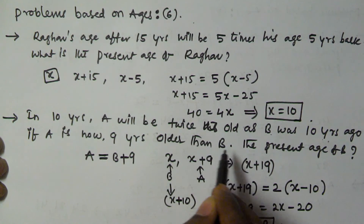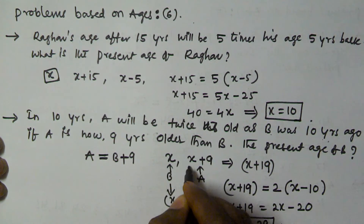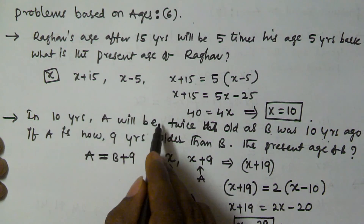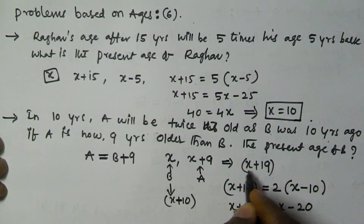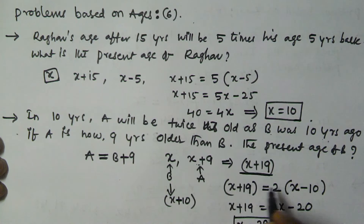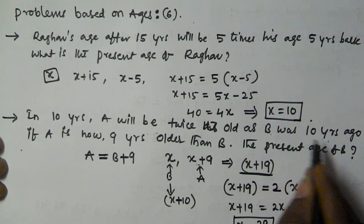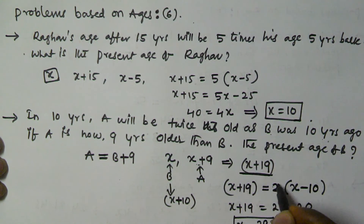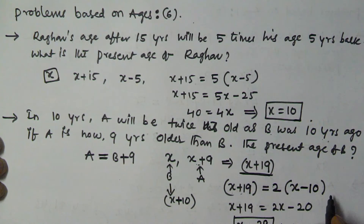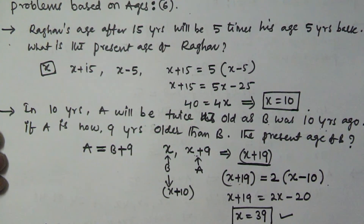To recap: A is now 9 years older than B. If B's age is x, then A's age is x plus 9. After 10 years, A will be x plus 19. B's age 10 years ago is x minus 10. Twice of that is 2x minus 20, which equals A's age after 10 years: x plus 19. So x plus 19 equals 2x minus 20, giving x equal to 39 years. Therefore B's age is 39 years.